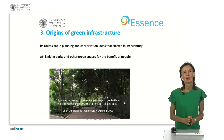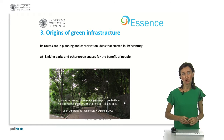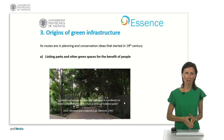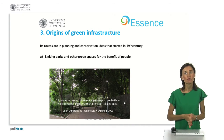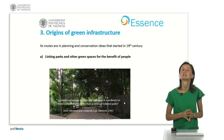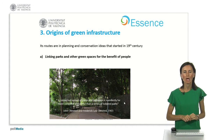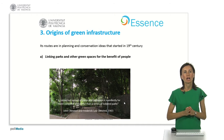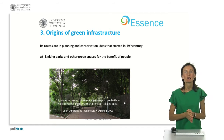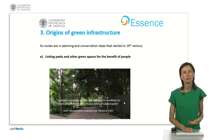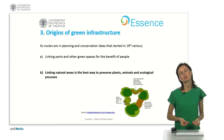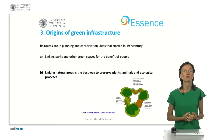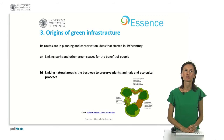Green infrastructure is a new term, but it's not a new idea. It has its roots in planning and conservation theories that started in the 19th century. First, it comes from the idea that linking parks and other green spaces can benefit people. And second, it comes from the belief that linking natural areas is the best way to preserve plants, animals, and ecological processes.